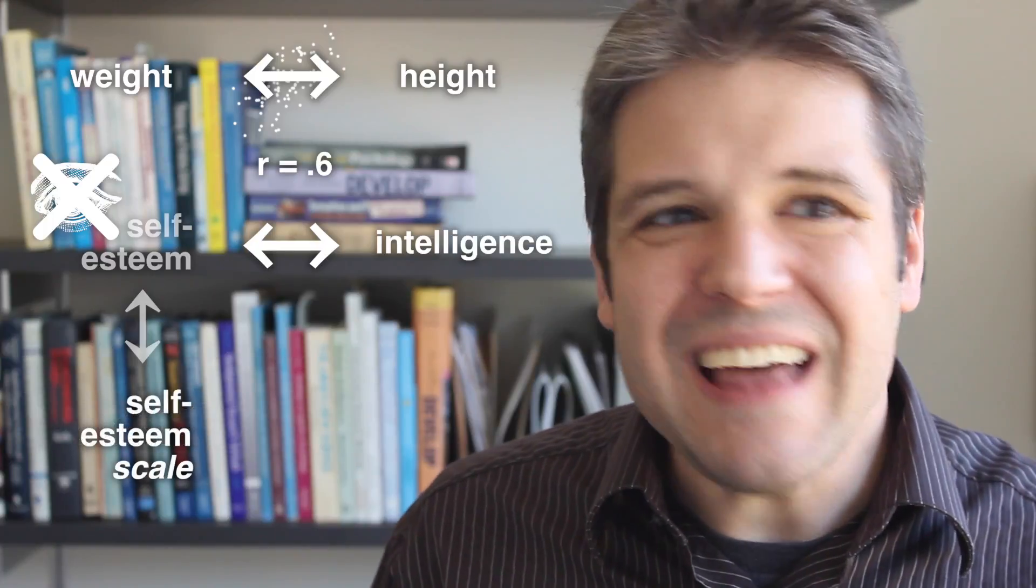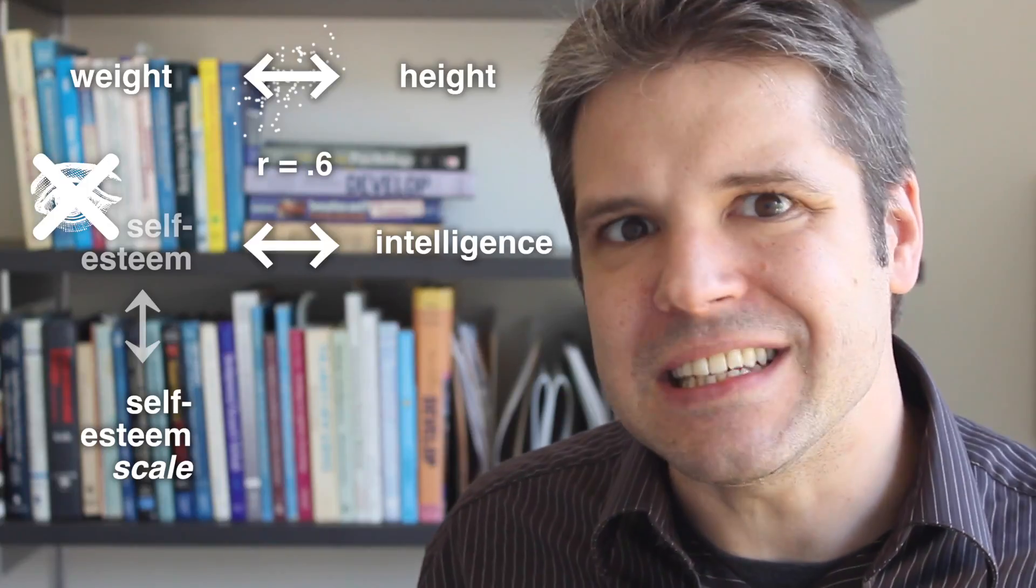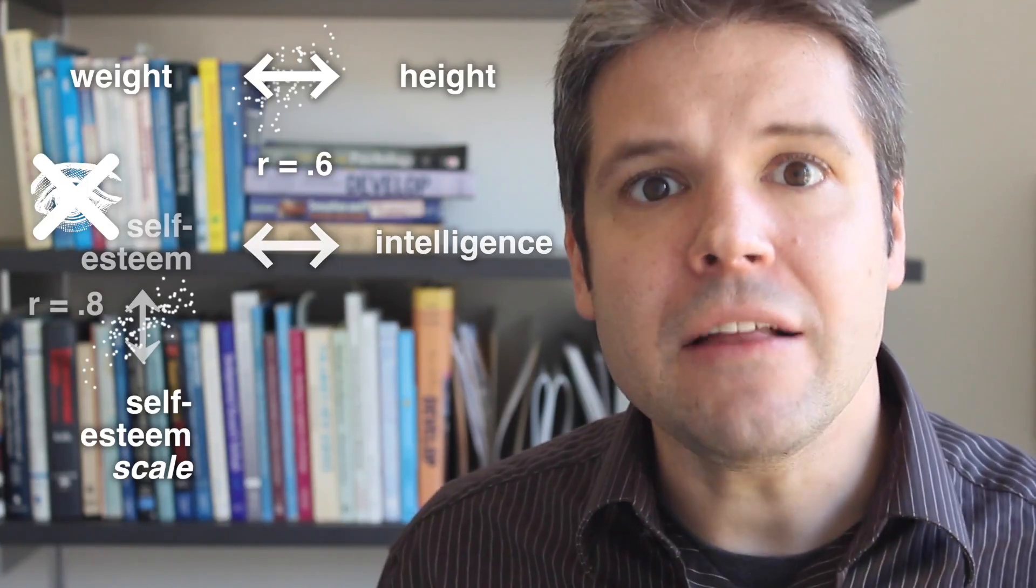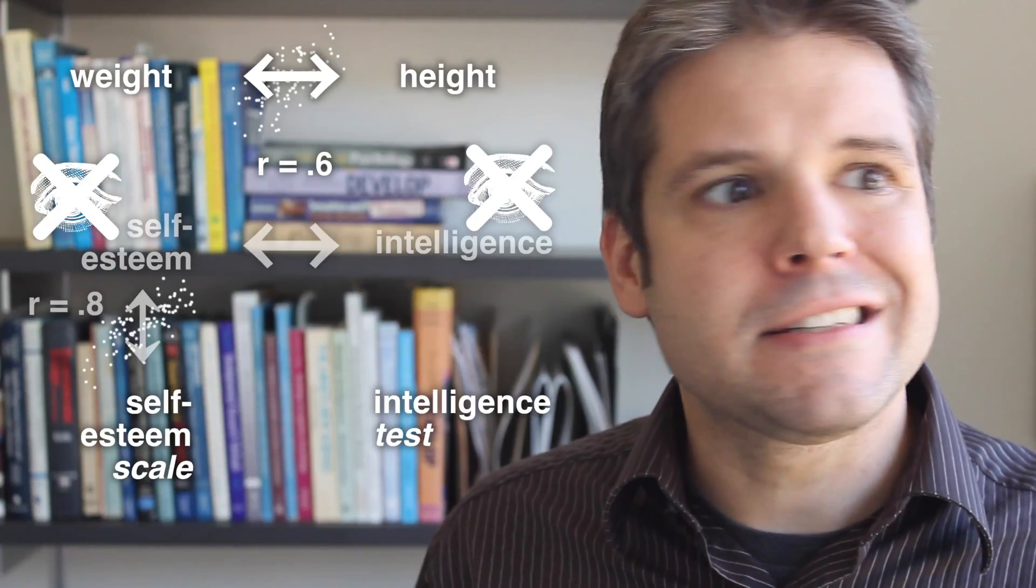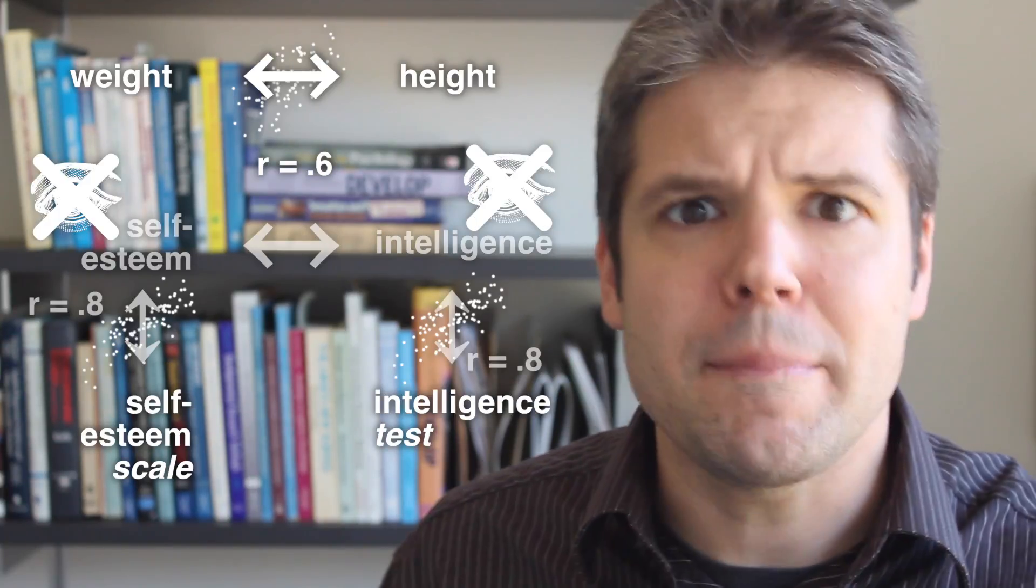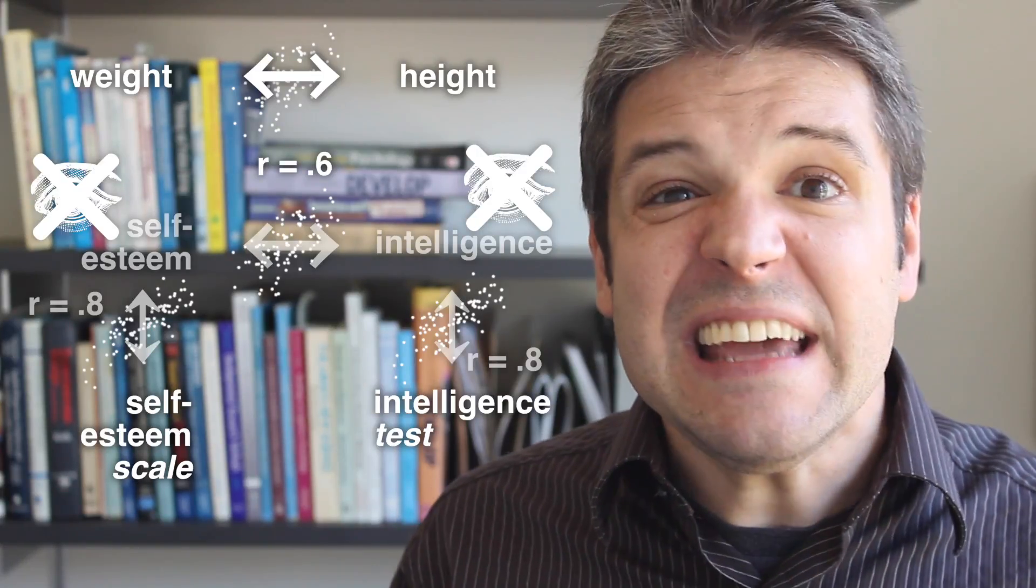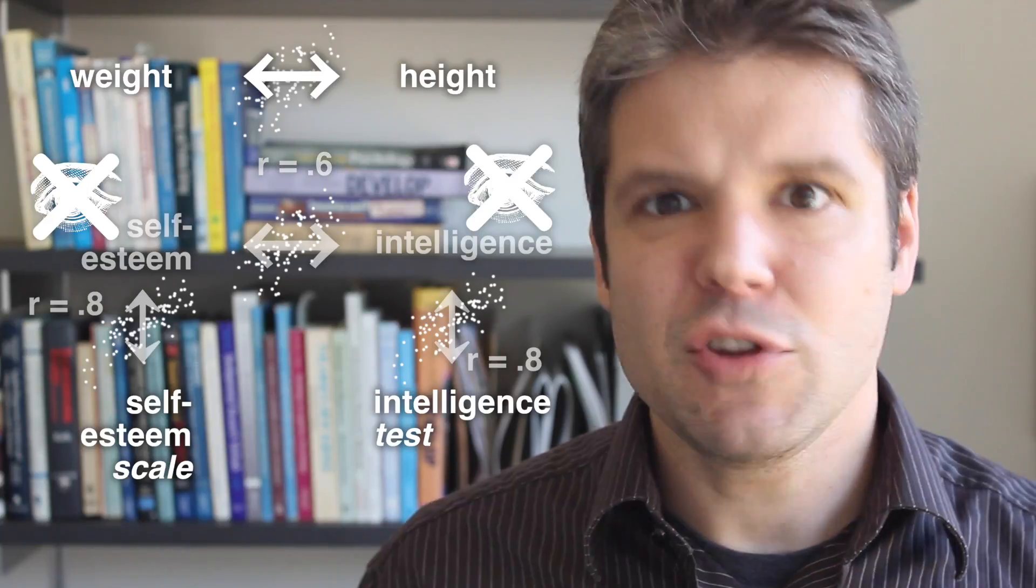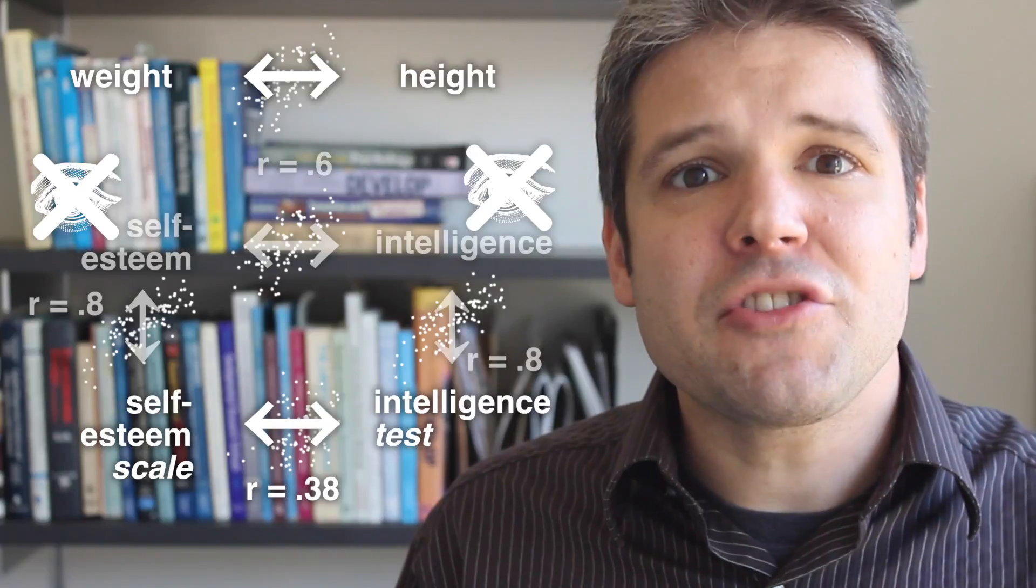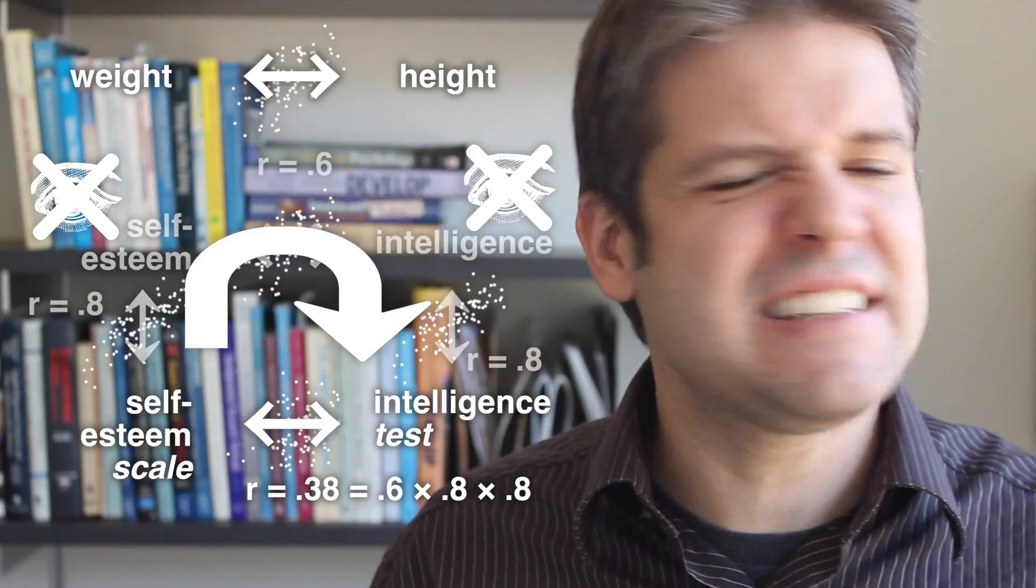So your survey score is related to this unobserved, unknowable, hypothetical construct of self-esteem, but it's not a perfect relationship. Same with measuring your intelligence. Your score on an intelligence test is related, but not identical to your actual hypothetical intelligence. What this means is that even if the pure hypothetical constructs are related just as much as height and weight, your observed measurements might be correlated much less, because you're actually observing a relationship that crosses three invisible paths instead of just one.